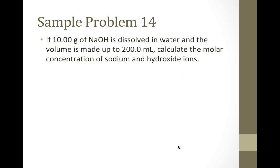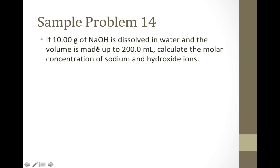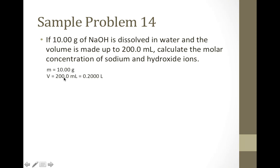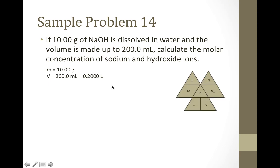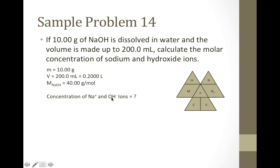We're going to go through one more problem that has a little bit of a twist, bringing together concepts from topic one on dissociation. If 10 grams of NaOH is dissolved in water and the volume is made up to 200 milliliters, we're asked to calculate the molar concentration of sodium and hydroxide ions. We're told our mass is 10 grams and our volume is 200 milliliters, which we convert to liters. We need to solve for the concentration of NaOH first, then find the concentration of each ion.